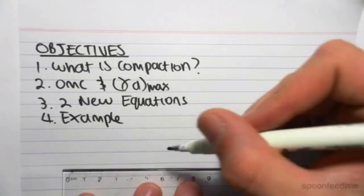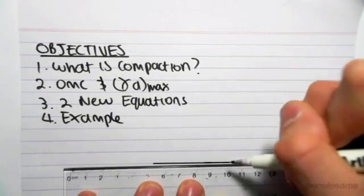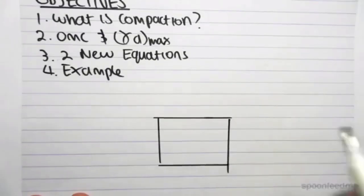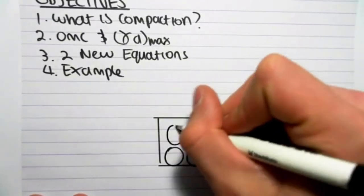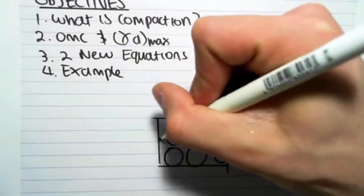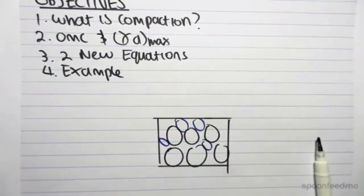So what is compaction? If we have a sample of soil, we know in our sample of soil we have solid soil particles, we have water, and we have pockets of air.